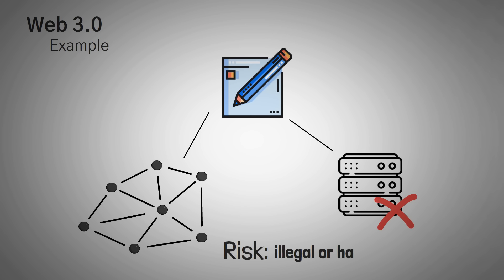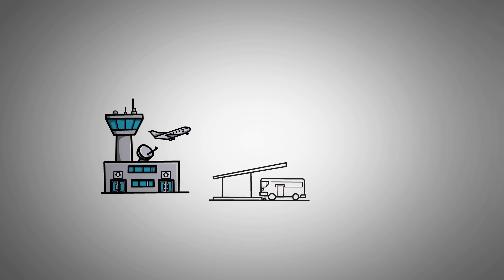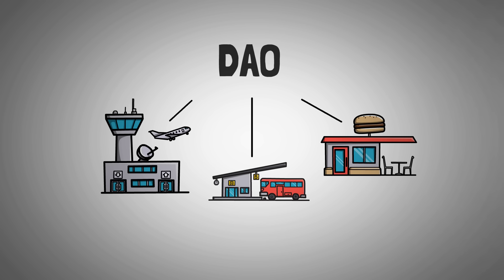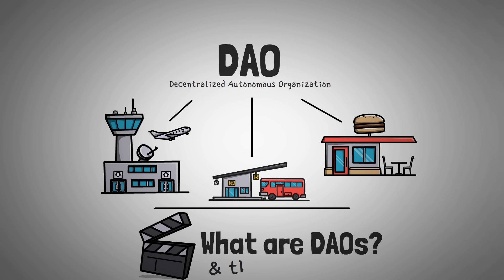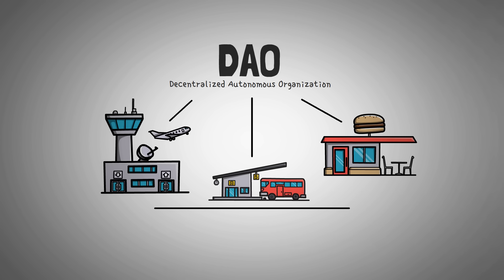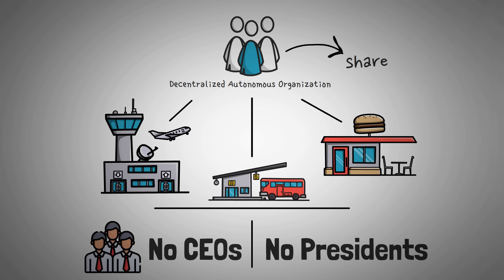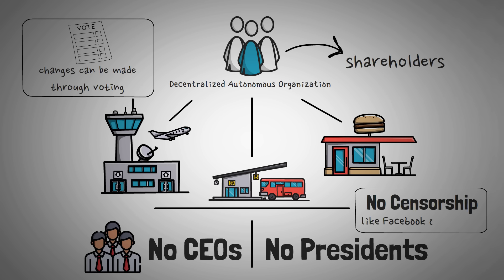Theoretically, this means there would be a lot of illegal and hateful things posted, but it would be in the name of freedom, and users of the networks could probably decide on a system to reduce that harmful content. In Web 3.0, experts say we will reach the point where every company is run by a decentralized group called a DAO — a Decentralized Autonomous Organization. DAOs mean there are no CEOs or presidents to impress. Those with the most tokens get to vote on how the company changes, not limited by a government or family tradition. In Web 3.0, there will be no censorship of social networks like Facebook or Twitter, and one controlling authority cannot shut it down.